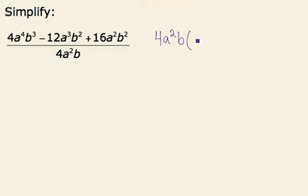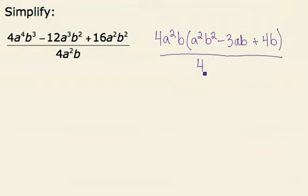Leaving a squared b squared minus 3ab plus 4b. All of this divided by 4a squared b.